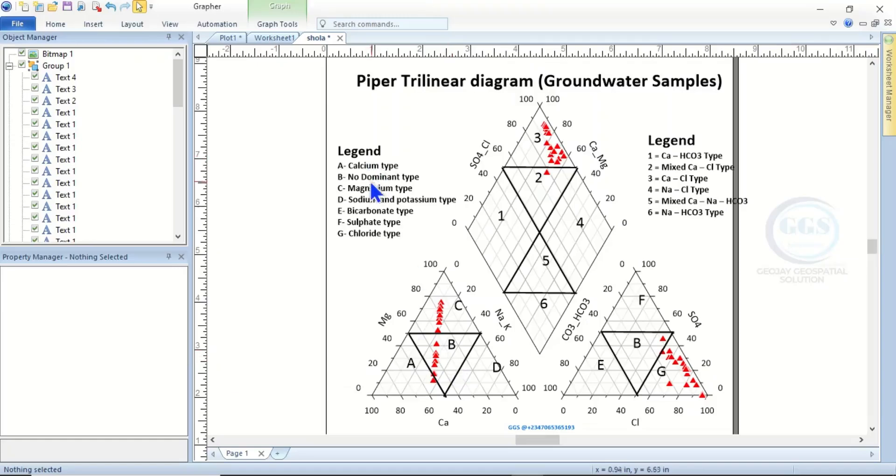And B is no dominant type. You can see it falls within the middle. This is at 50-50-50, so samples that fall within this region have no dominant cation. Then the samples that fall here at C,